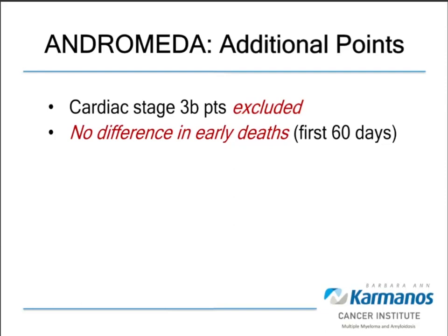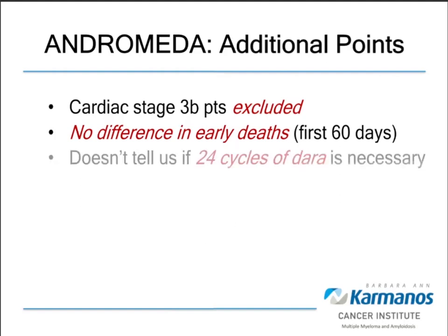Patients with the most advanced cardiac disease were excluded from the study, so we can't be sure the benefits would extend to that population. The study design also doesn't tell us whether the extra two years of maintenance therapy are really necessary — it's possible that just adding the antibody during induction would have led to sustained disease control, but we don't know. Whether maintenance is truly needed is an open question being explored in amyloidosis and multiple myeloma.